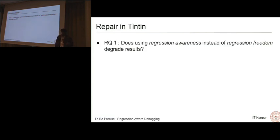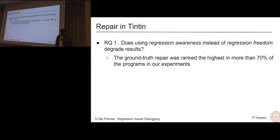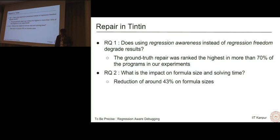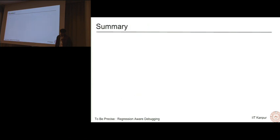What were the results? The first research question we answer is: does using regression awareness instead of regression freedom actually degrade the results? Are we compromising too much? We found that the ground truth repair, the actual repair, was ranked the highest in more than 70 percent of programs in our experiments. We're not compromising too much. The quality is still good. But what is the impact on formula size and solving time? Why are we even doing this? Reduction was around 43 percent on formula sizes and we attained speedups between 1.3 to 6.5x.